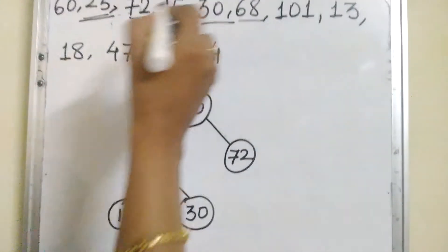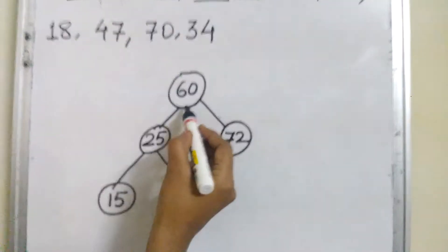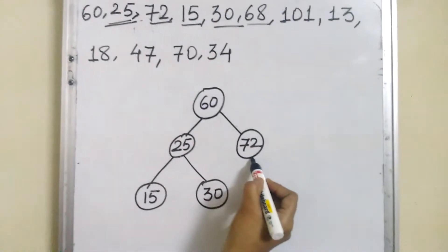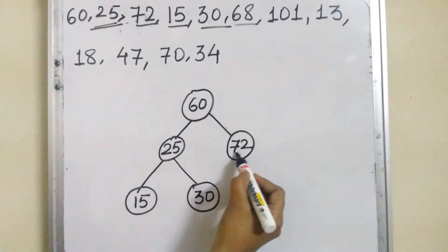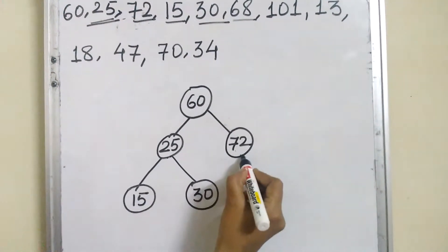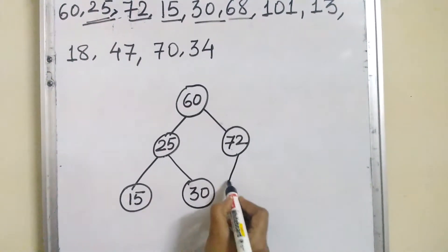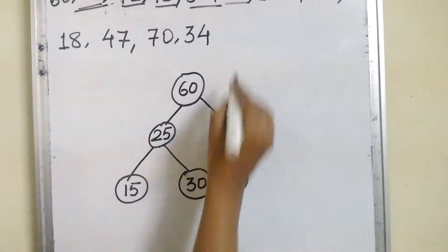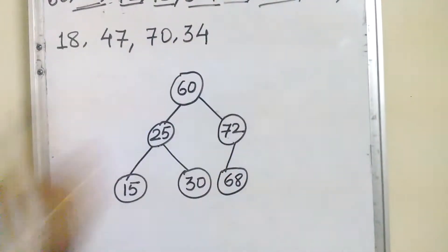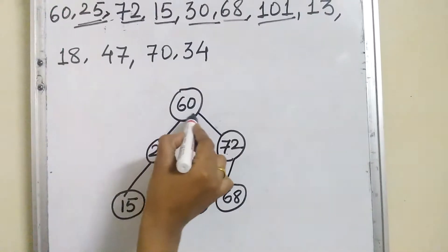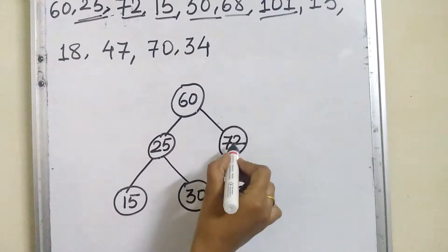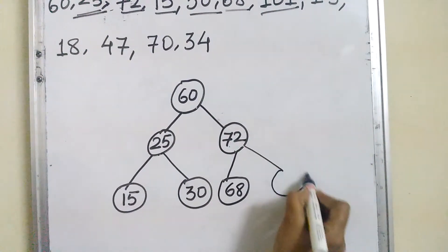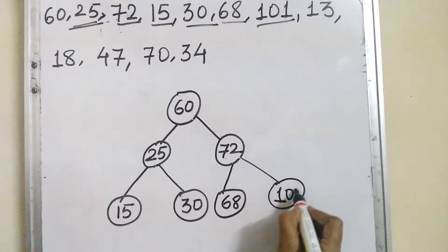Next value is 68. From the root, it is greater, so it goes to the right. But at the right we have 72. Since 72 is greater than 68, we insert 68 at the left side of 72. Next value is 101. From the root, it goes to the right. 101 is greater than 72, so it is inserted at the right of 72.